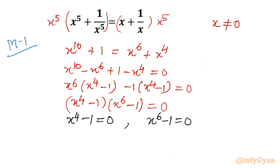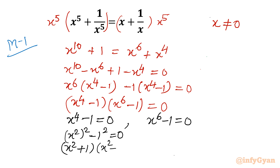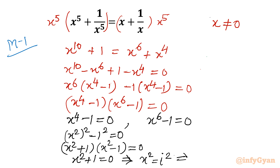Let us begin with the first equation. I will write x square whole square minus 1 square equal to 0 — difference of two squares: (a+b)(a-b). So it becomes (x square plus 1)(x square minus 1) equal to 0. From the first factor, x square plus 1 equal to 0, so x square equals i square, giving x equal to plus minus i.